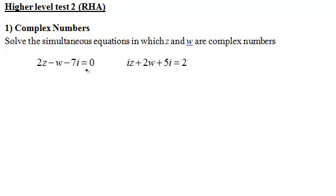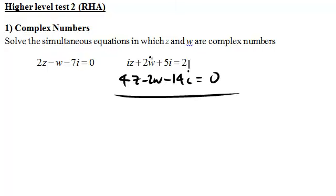I'm going to double this one and write it under this one. 4z minus 14i equals 0. I can then just add these. So I get iz plus 4z and the omegas go. 5i take away 14i is 9i equals 2.